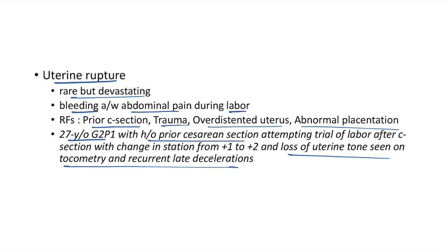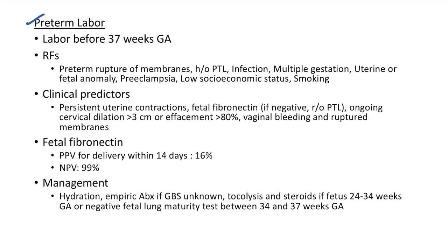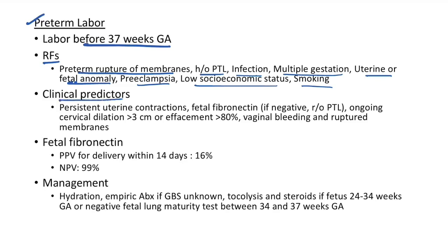Preterm labor is labor before 37 weeks gestational age. Risk factors include preterm rupture of membranes, history of preterm labor, infection, multiple gestation, uterine or fetal anomaly, preeclampsia, low socioeconomic status, and smoking. Clinical predictors of preterm labor: persistent uterine contractions, fetal fibronectin (FFN), ongoing cervical dilatation >3 cm or effacement >80%, vaginal bleeding, and ruptured membranes. The positive predictive value of FFN for delivery within 14 days is only 16%; however, the negative predictive value is 99%.